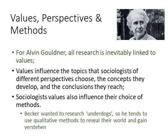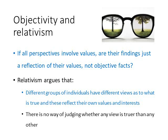For Alvin Gouldner, all research is inevitably linked to values. Values influence the topics that sociologists of different perspectives choose, the concepts they develop, and the conclusions they reach. Marxists focus on poverty and capitalism; feminists on patriarchy and gender inequality; functionalists on how social cohesion is maintained. Sociologists' values also influence their choice of methods — Becker, wanting to research underdogs, tended to use qualitative methods to reveal their world and gain empathy. If all perspectives involve values, are their findings just a reflection of those values, and therefore not objective facts? That would mean sociology can never be truly scientific.